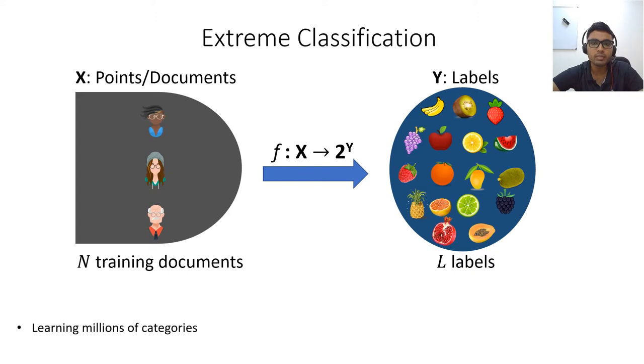But before I go into Galaxy, let me give a quick primer on extreme classification. The aim in extreme classification is to learn to predict for a given point, the most relevant subset of categories or synonymously labels from an extremely large label set.